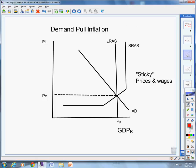First one, demand pull inflation. What's it sound like? Demand and inflation. We're going to shift aggregate demand and we're going to shift it to the right. Demand pull inflation. Did it create inflation? Yes, it did.